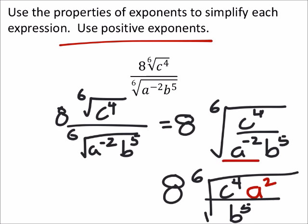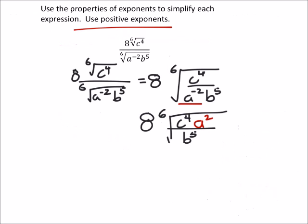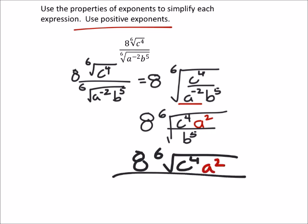Technically I would be fine with this. I do want to say that they want to show this as separate individual numerators and denominators. Meaning that I would have 8 times the 6th root of c to the 4th times a squared all over the 6th root of b to the 5th.